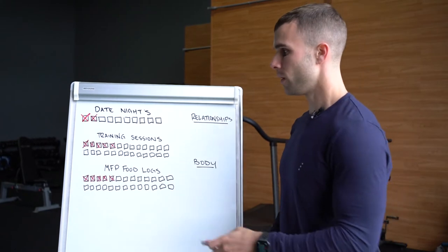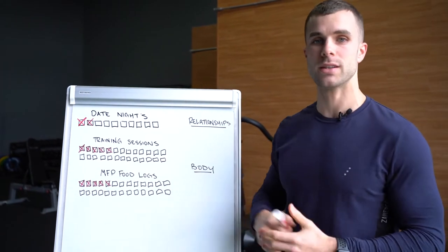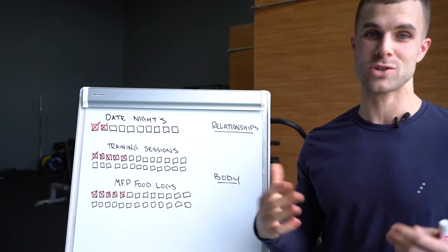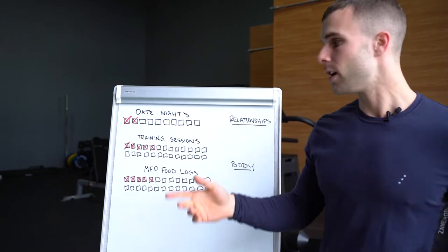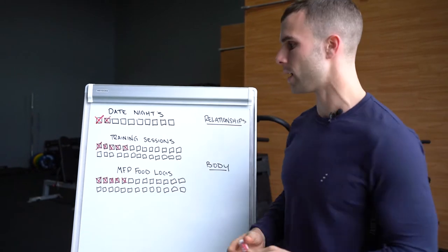So this is an easy example. For my relationships, maybe I set the goal of date nights. This is 10 boxes. That gives me two weeks of no date nights, just for a little buffer room to make sure I can still accomplish my goal. But 10 date nights in 12 weeks, 3 months, 90 days. So I have 10 boxes. Every time I mark a red X, that's after I do a date night.